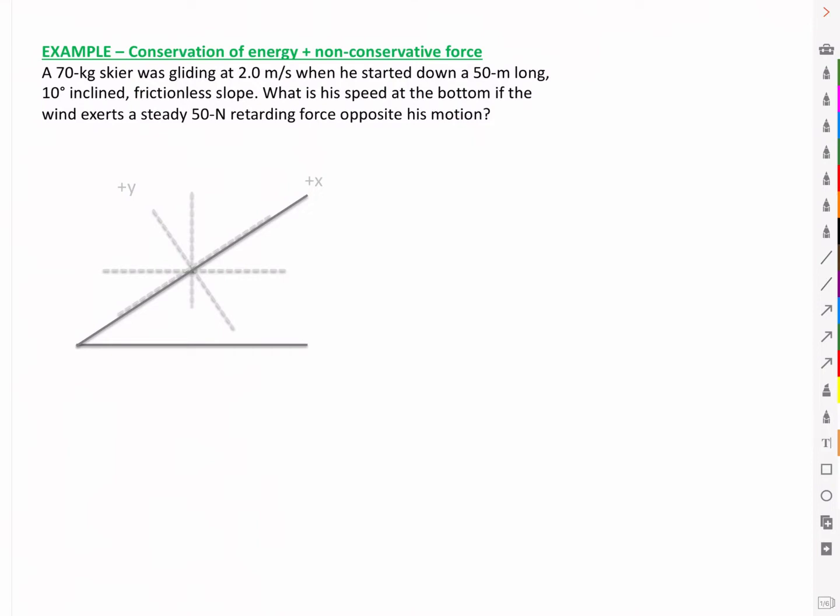We have a 70 kg skier gliding at 2 m per second when he started down a 50 m long, 10 degree inclined frictionless slope. What is his speed at the bottom if the wind exerts a steady 50 N retarding force opposite his motion?